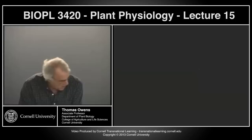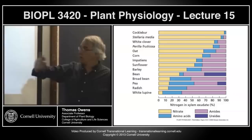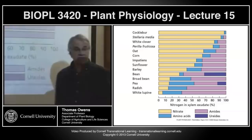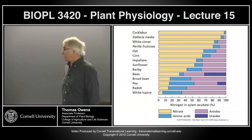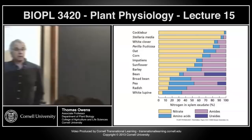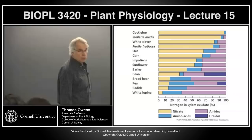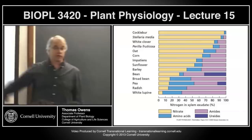Here's an interesting observation about nitrogen transport in the xylem across many different plant species. Yellow represents nitrate being transported; blue and purple colors represent reduced nitrogen compounds — amines, amino acids, ureides, and similar. Plants like cocklebur transport mostly nitrate, meaning nitrate reduction and assimilation into organic compounds is occurring in the leaves. In contrast, lupins do most of their nitrogen assimilation in the roots.